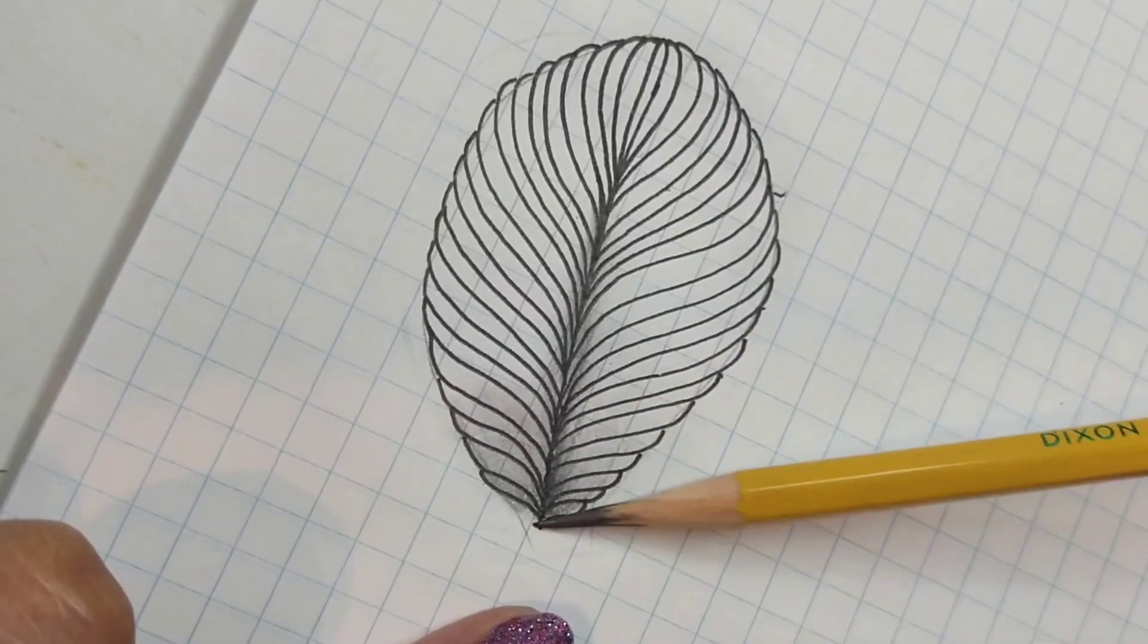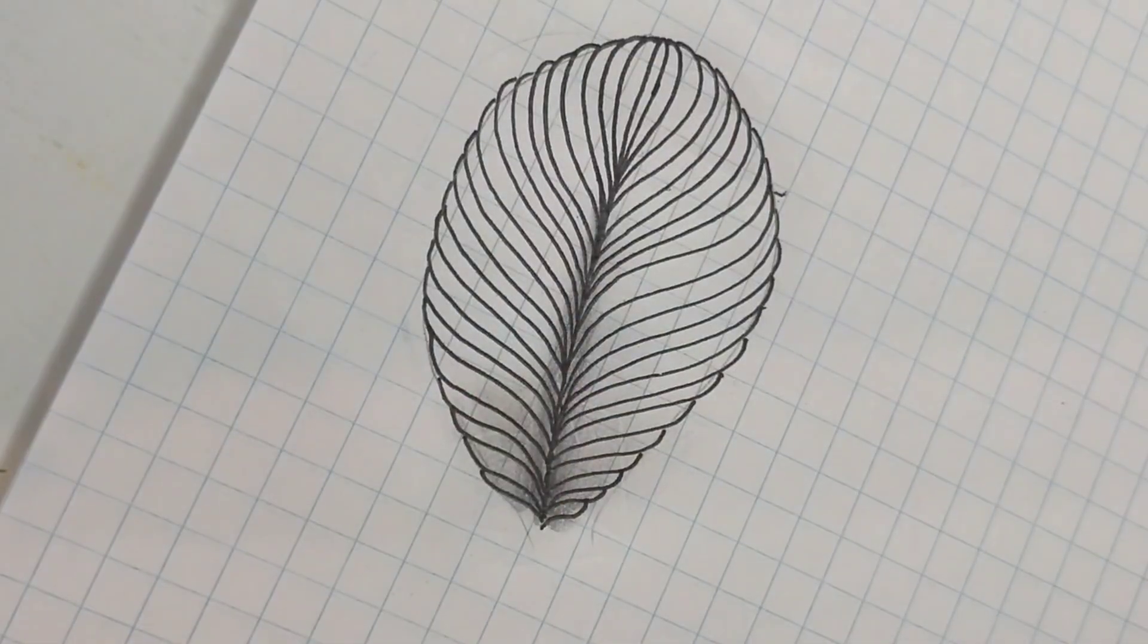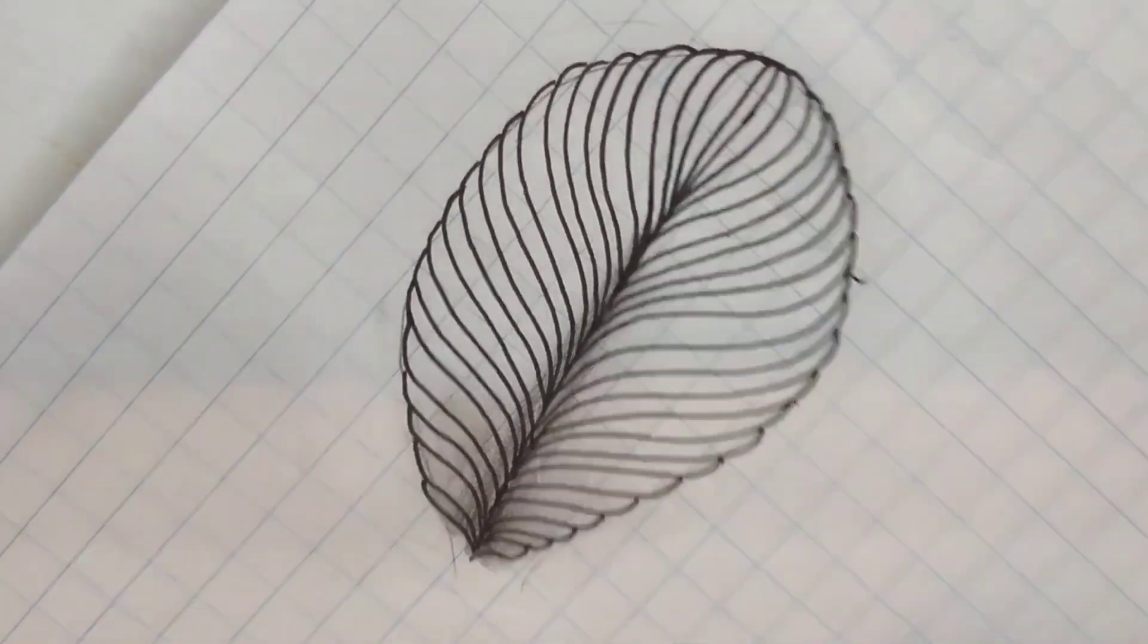And if I can, I'll come back and darken that just a bit more. And that's basically the result. These are the leaves that I draw.